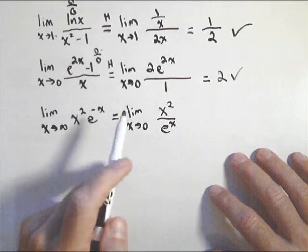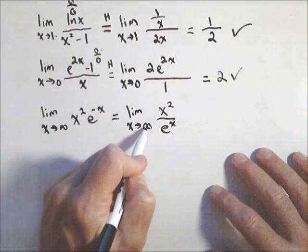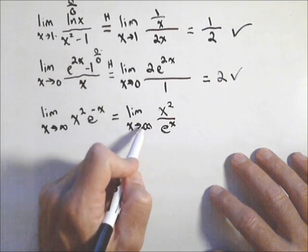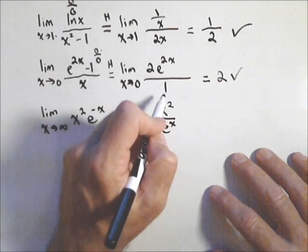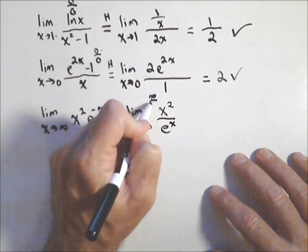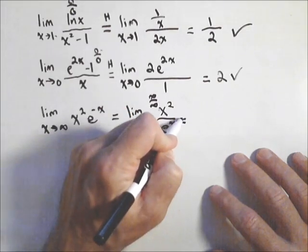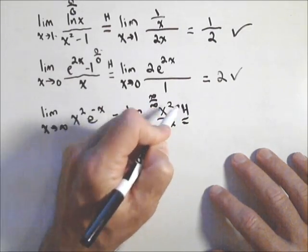But now, the way this looks, that should be infinity. This is infinity. E to the positive infinity is infinity. So I now have an infinity over infinity case. I can now apply L'Hopital's rule.